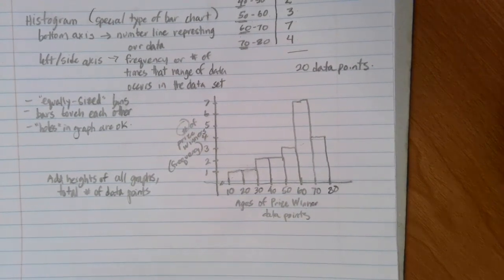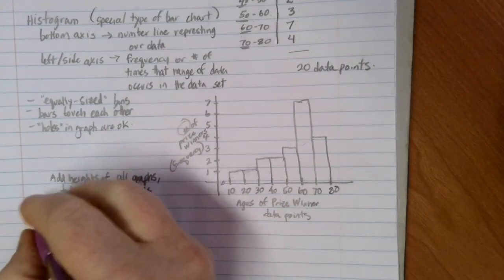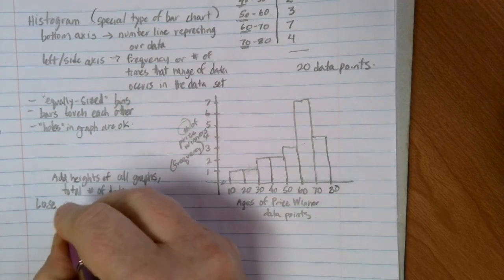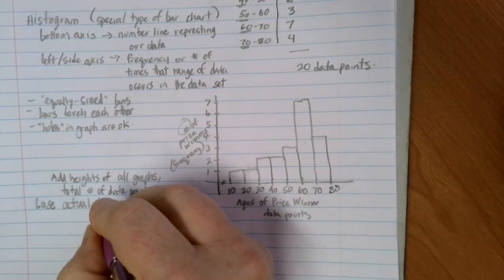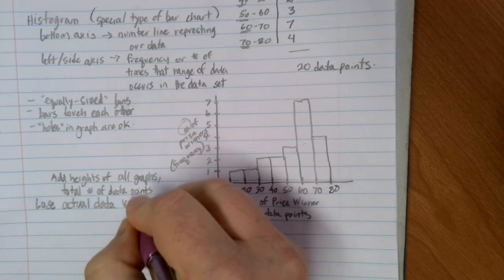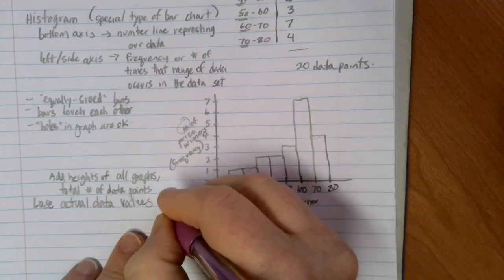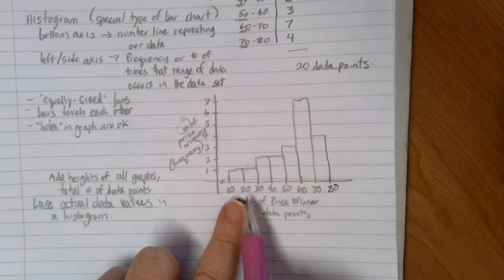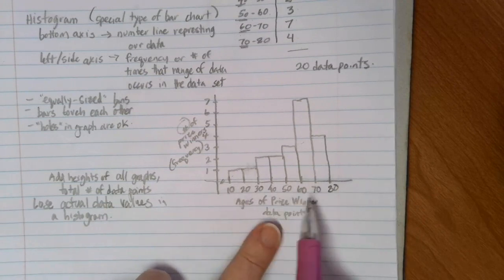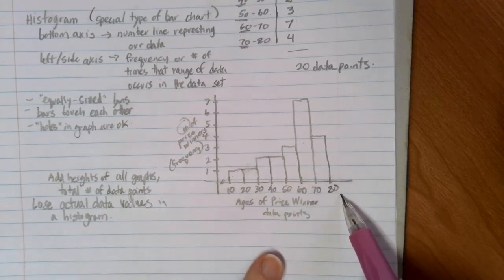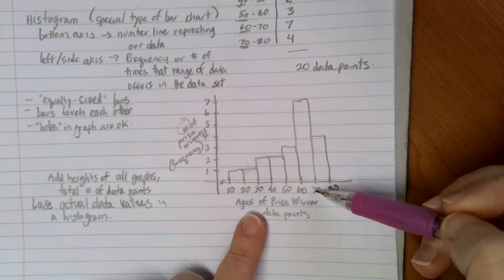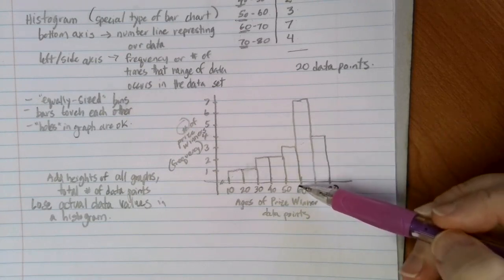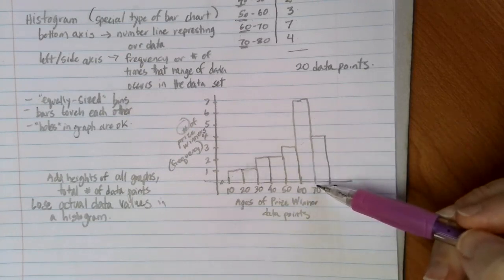So that becomes another cool piece of information that we can get from this. Notice that one thing that we lose is we lose the actual data values when in a histogram. Because here what we end up is we're looking at ranges of data and how many things fall into each one of those categories. So I can't look at this and tell you how many people were aged 63. All I can do is look and tell you that there were seven people that were aged somewhere between 60 and 70, but I'm not really sure where.